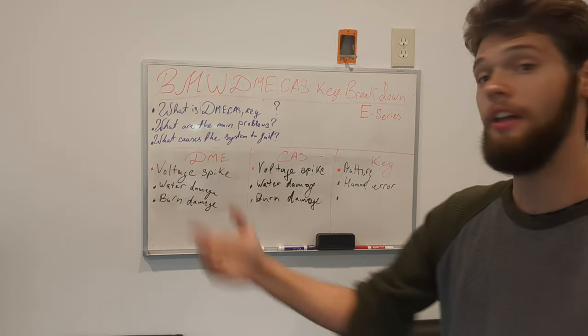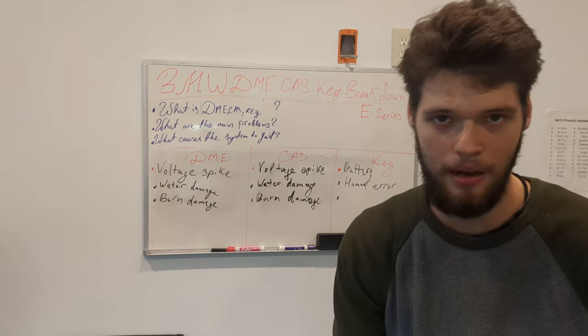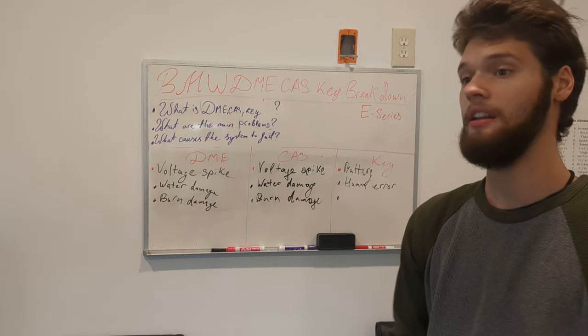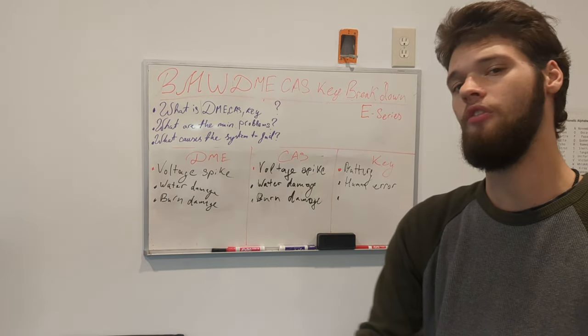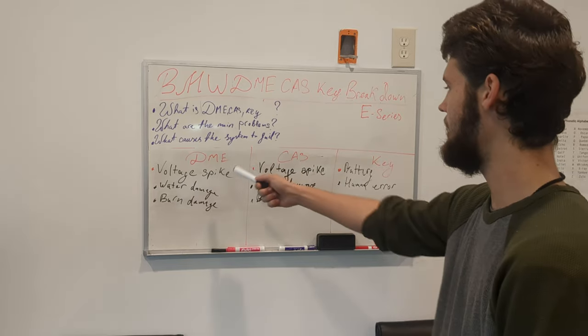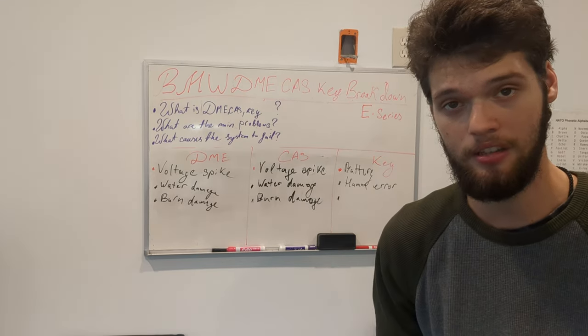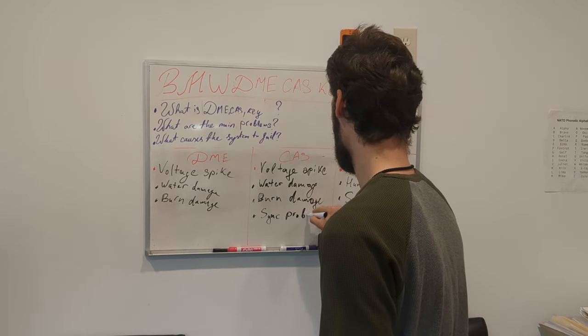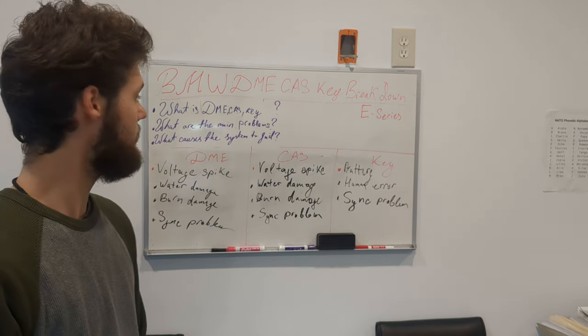And another problem that all three of these modules have is the synchronization problem. Again, the synchronization problem comes from the voltage spike, sometimes when the car battery is low, it can cause certain voltage spikes, and when voltage spikes are happening, because either there is too much voltage or too low voltage, the DME, CAS, and the key, because all three of them are synchronized together, they get desynchronized.